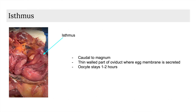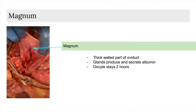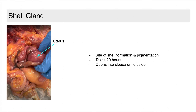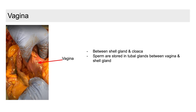Next is the isthmus, which is located caudally to the magnum. This thin-walled structure is where egg membrane is secreted, and an oocyte can remain for one to two hours. The magnum is the thick-walled part of the oviduct. Within it are glands that produce and secrete albumin, whose function is to prevent leaks of fluids and carry enzymes, hormones, or vitamins to parts of the body. As the oocyte travels, it can stay in this location for two hours. The shell gland, also known as the uterus, is the site of shell formation and pigmentation within a chicken — a process that may take up to 20 hours. The shell gland also opens into the cloaca on the left side. The vagina of a chicken lies between the shell gland and the cloaca, or oviduct. Sperm are stored in tubule glands between the vagina and the shell gland.